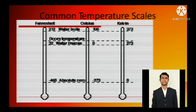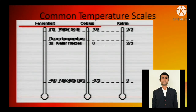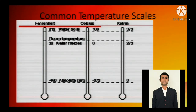The common temperature scales — you can see three different scales: Fahrenheit, Celsius, and Kelvin. 100 degrees Celsius is equivalent to 212 degrees Fahrenheit and also equivalent to 373 degrees Kelvin. Water boils at the top position at 100 degrees Celsius. The room temperature is somewhere in between. 0 degrees Celsius is equivalent to 32 degrees Fahrenheit and 273 degrees Kelvin.